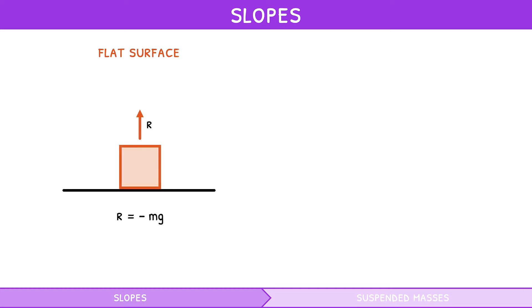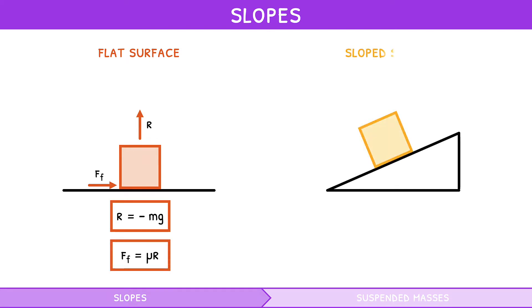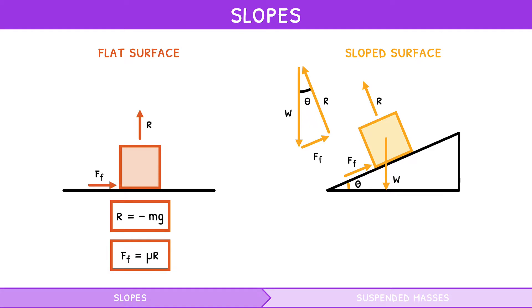In that video, we covered that the reaction force of an object on a flat surface is equal and opposite to the object's weight, and solid friction is equal to the coefficient of friction times the reaction force. But what happens if an object is at equilibrium on a sloped surface at any angle theta? The reaction force is perpendicular to the surface and friction is parallel to it. According to Newton's first law, all forces are balanced at equilibrium. Completing the force diagram with weight, we can form a force triangle with the three applied forces. Since reaction force and friction form a right angle, reaction force equals weight times cosine of theta, and friction equals weight times sine of theta.